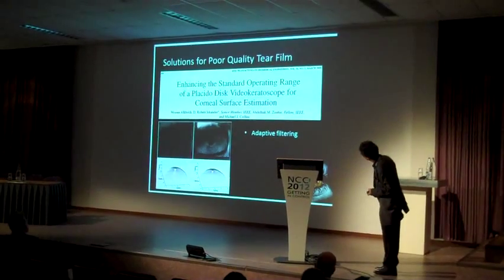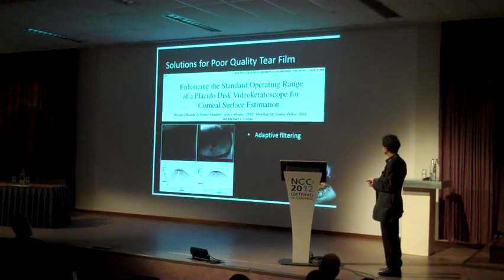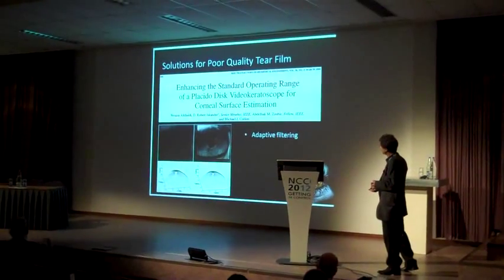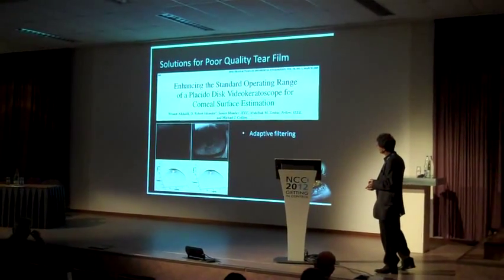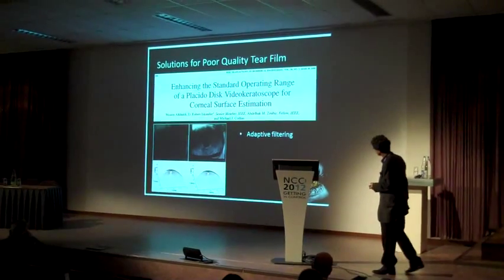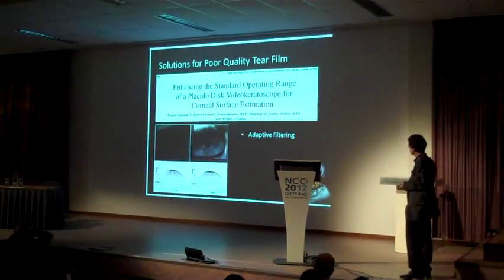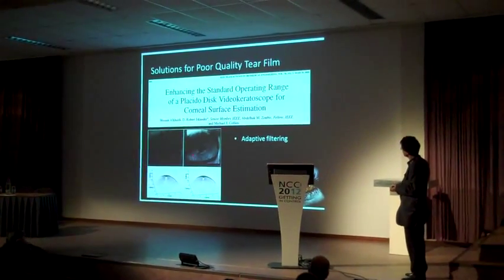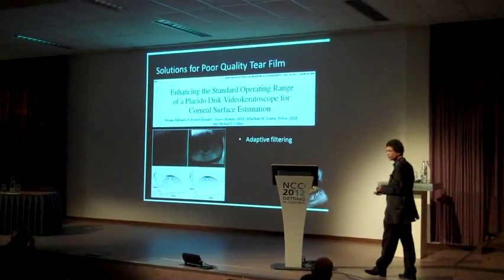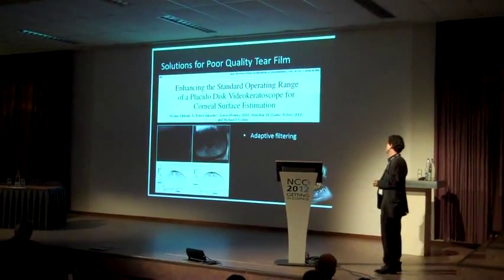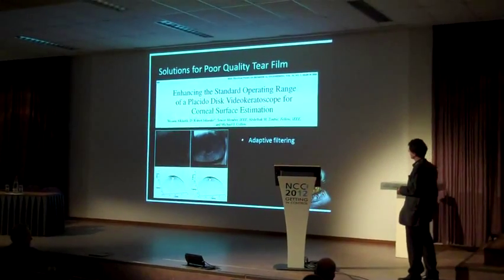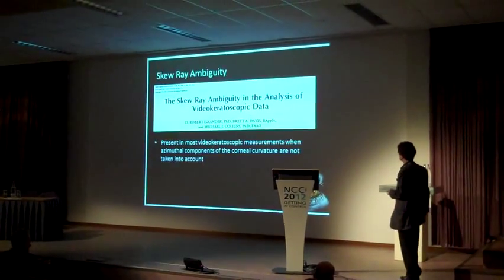Here you can see an example — there are areas where we couldn't get information, and through adaptive filtering, when we do the processing and paste the image back into the videokeratoscope and ask it to use exactly the same algorithm, we can actually get a better estimate. So this is essentially about the tear film.